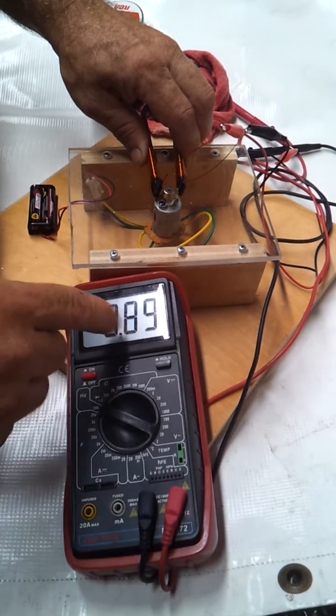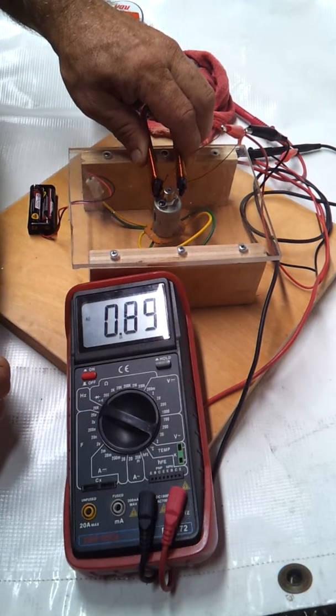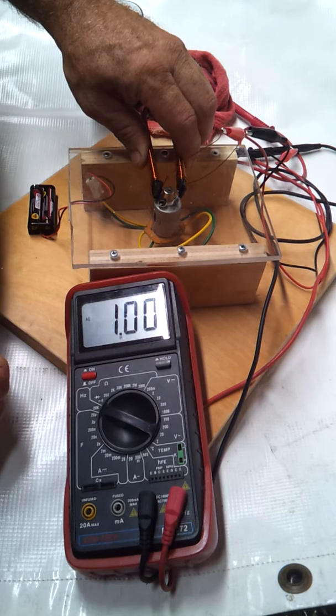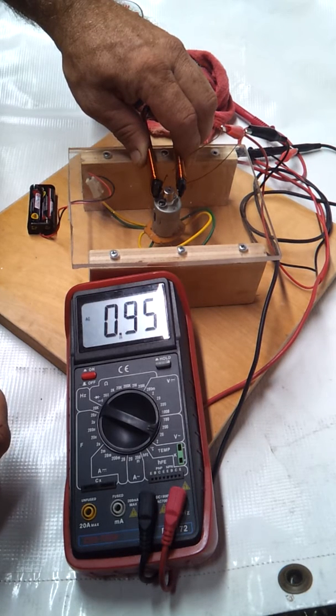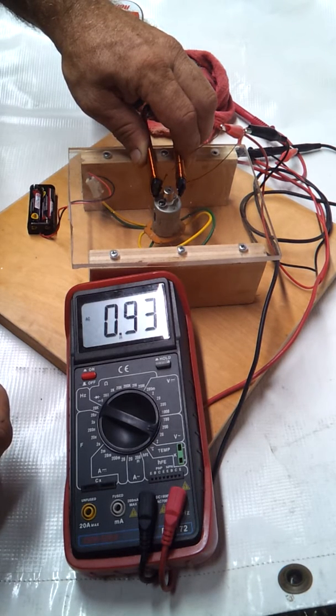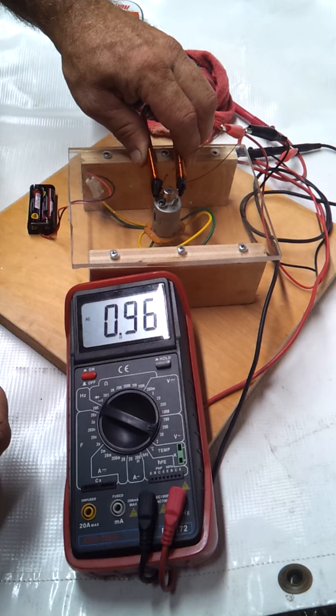And so this is 0.89, 0.9 and I can get it all the way to one. It really bogs the motor down, but it really likes to run about 0.93, 94, 95.